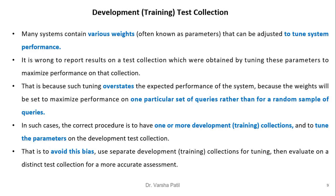Many IR systems contain various weights, often called parameters, that can be adjusted to tune system performance. It is wrong to report results on a test collection that were obtained by tuning these parameters to maximize performance on that same collection. Such tuning overfits the expected performance because the weights are set to maximize performance on one particular set of queries rather than a random sample. The correct procedure is to have one or more training collections and tune the parameters on a separate development test collection.